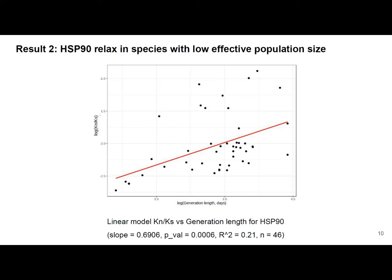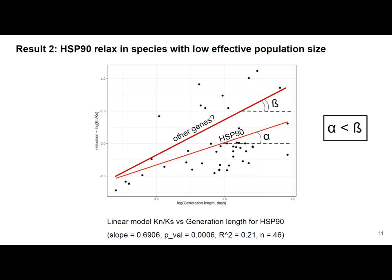First, we looked at the relaxation of Hsp90. We collected data from Ensembl Compara about KN/KS ratios of 1-to-1 orthologs of Hsp90 for 46 mammalian species, then performed a simple linear model of KN/KS versus generation length, which is another approximation of effective population size. We see that Hsp90 has a positive slope — it relaxes in species with low effective population size. The next step is to compare this relaxation with other genes, to determine whether the slope of Hsp90 is less steep than the slope of other genes, or in other words, whether alpha is less than beta.